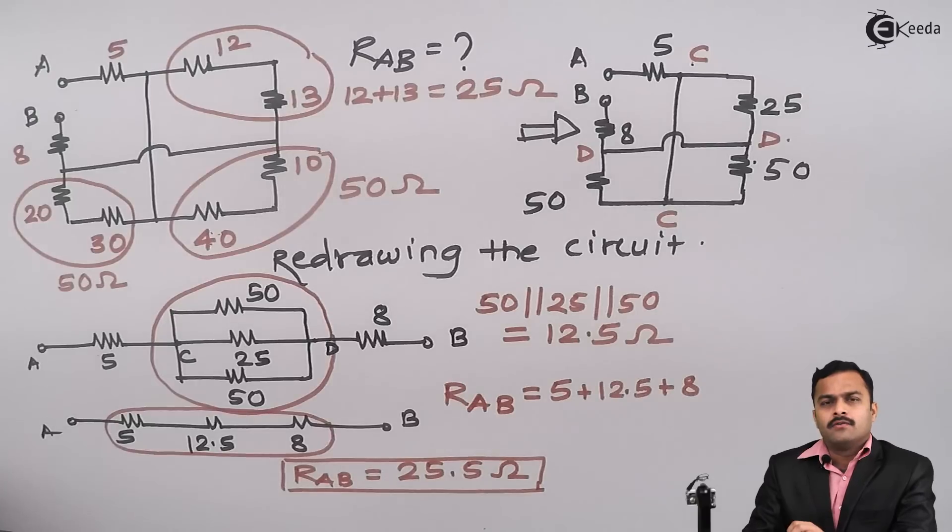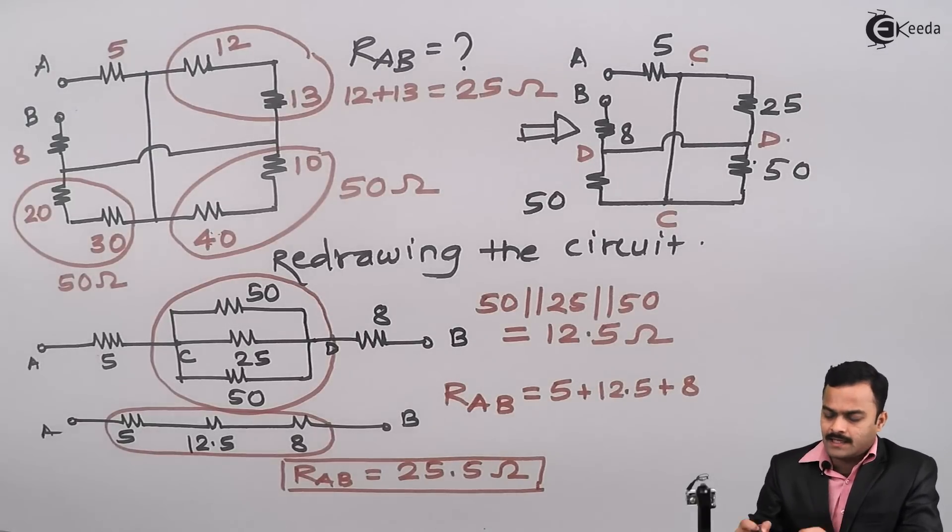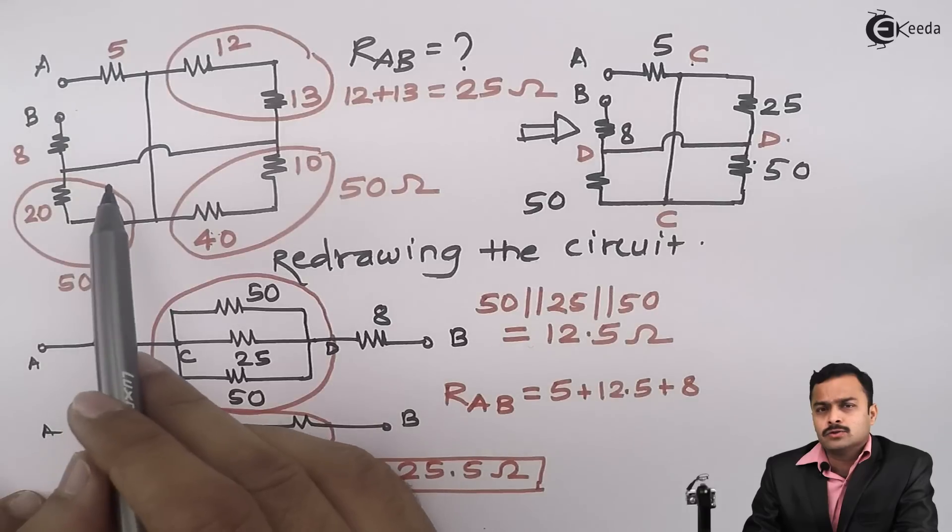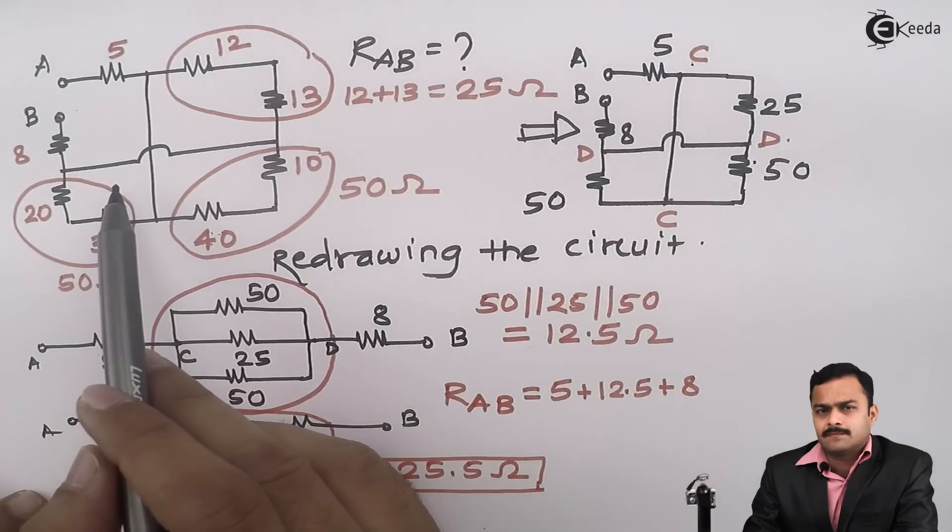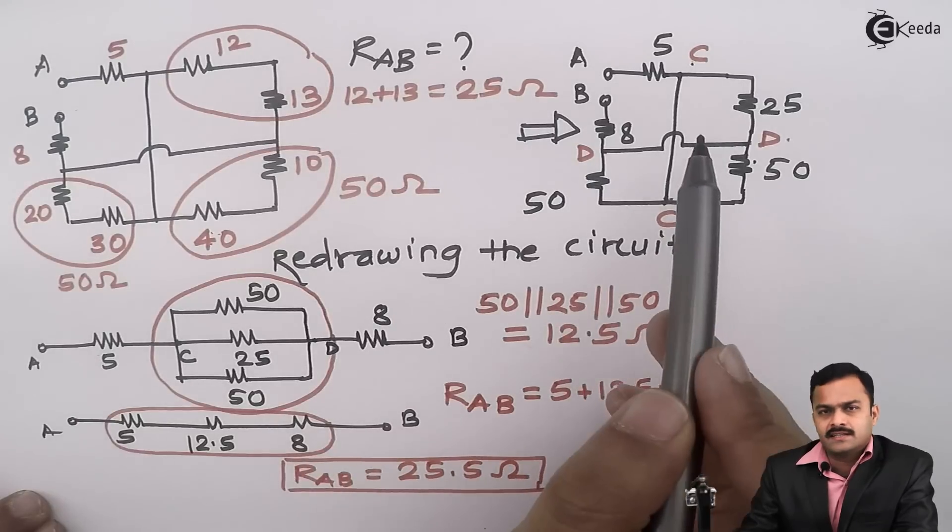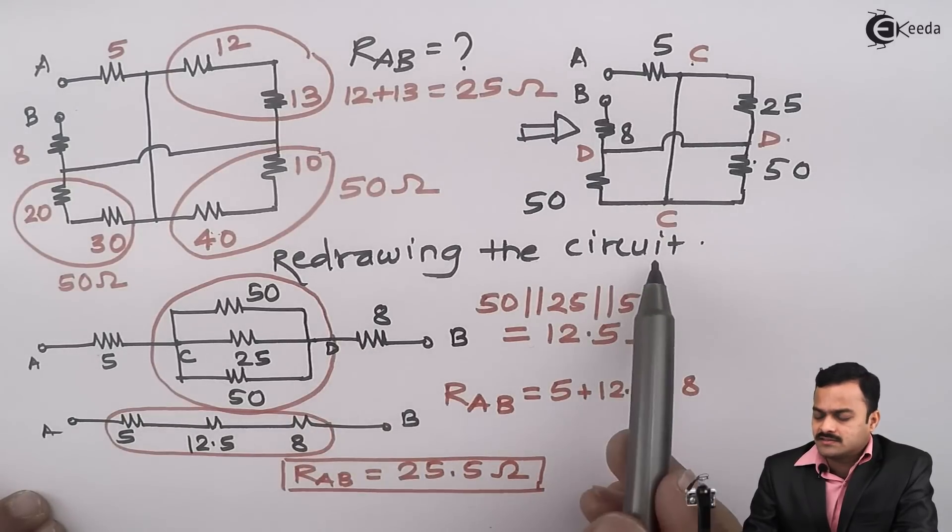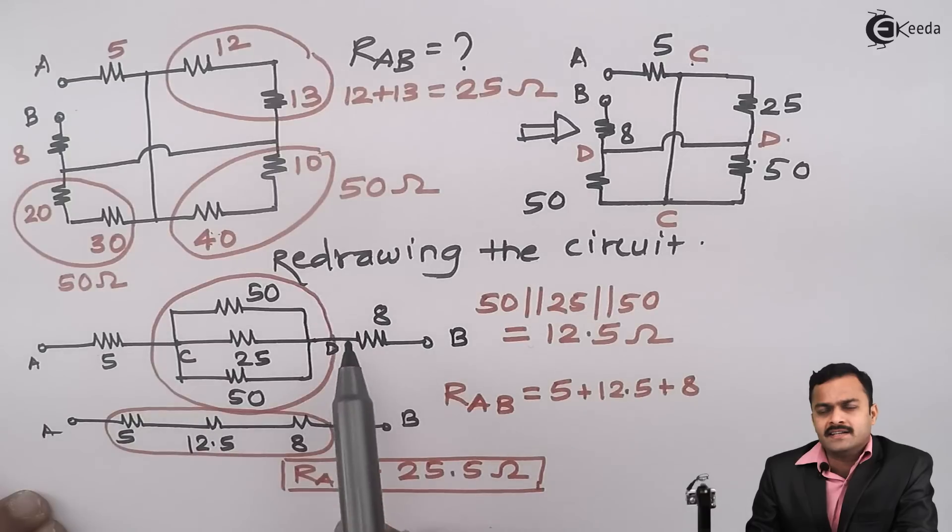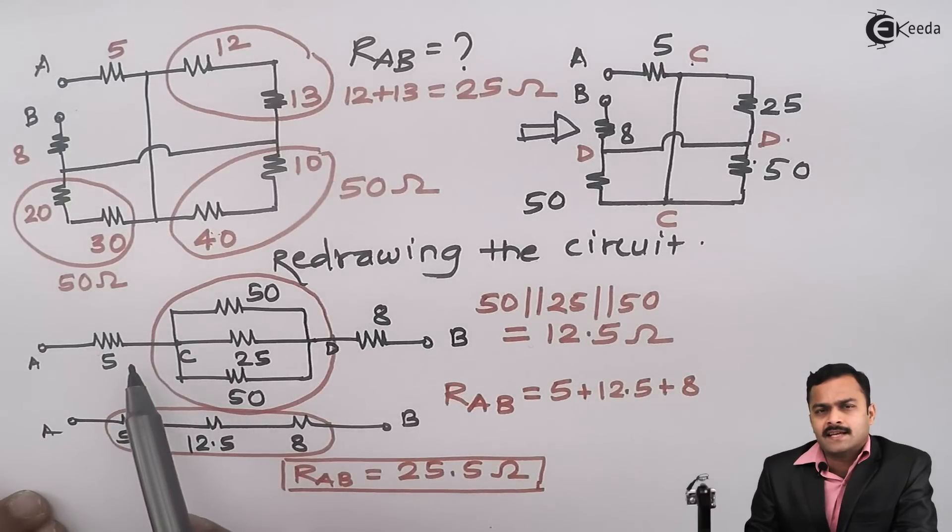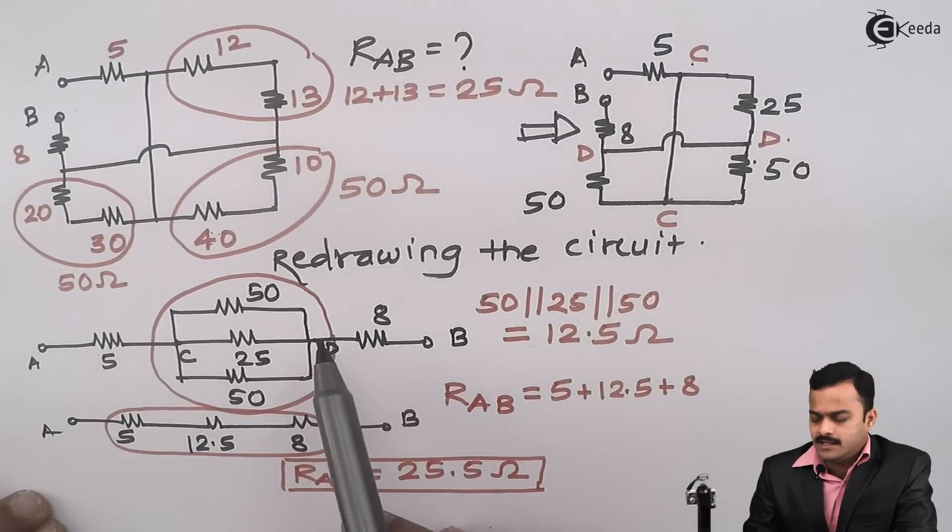So here we have seen that whenever such type of connections are coming where you could not make out whether it's series or parallel, it's better to redraw the circuit and check how many points are there. And after redrawing the circuit you could very well or easily make out how many series and parallel connections are given, hence to get a final answer. So here we come to an end of this problem.